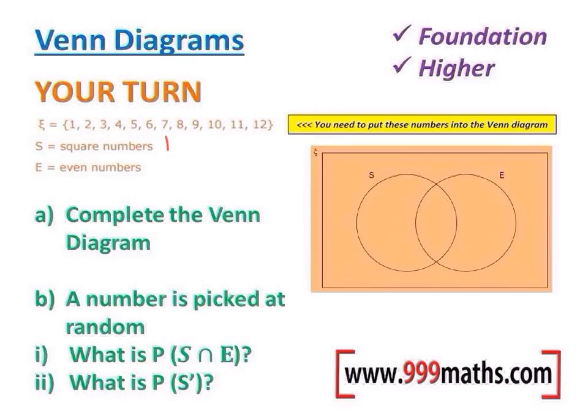So this question actually wants you to put the numbers into the Venn diagram initially. In the S circle, it wants the square numbers. Well, 1 squared is 1, 2 squared is 4, 3 squared is 9, and the numbers only go up to 12 and there are no other square numbers in that selection. Now the even numbers are 2, 4, 6, 8, 10, and 12. So let's put the numbers in now. First of all, I'm going to start with the middle section, the numbers which are square and even. Well, that will be 4.